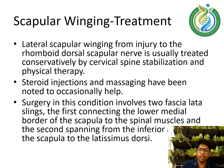Lateral scapular winging from injury to the rhomboid dorsal scapular nerve is usually treated conservatively by cervical spine stabilization and physical therapy. Steroid injections and massage have been noted to occasionally help. Surgery in this condition involves two fascial slings: the first connecting the lower medial border of the scapula to the spinal muscles, and the second spanning from the inferior angle of the scapula to the latissimus dorsi.